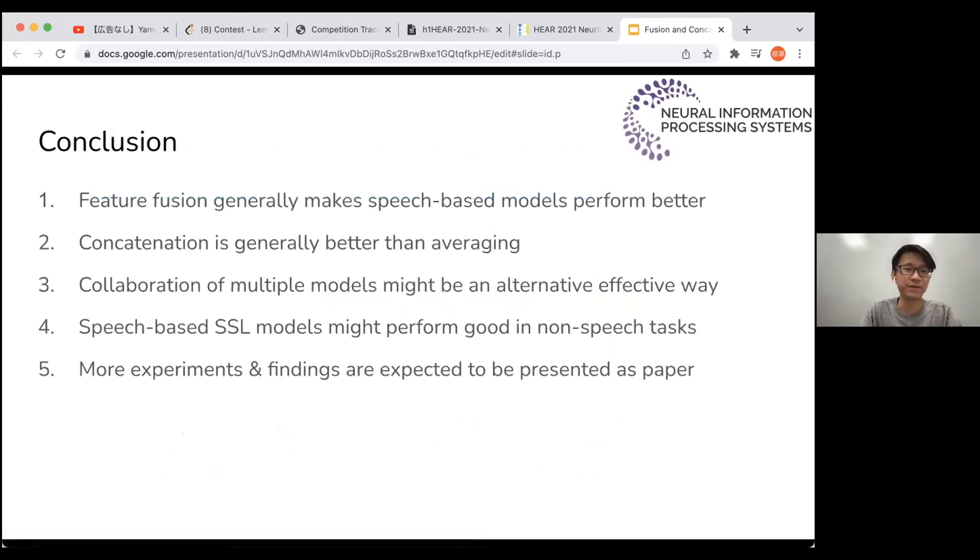So the conclusion: first, feature fusion generally makes speech-based models perform better. Second, concatenation is generally better than averaging. Third, we dig into the practical use of the collaboration of multiple models. We think that in the realm of representation learning, model-assembling is a good way that maybe you can use in practice.